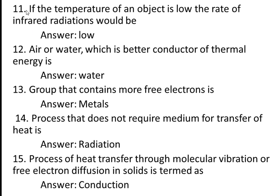Eleventh question: if the temperature of an object is low, the rate of infrared radiation will be low. This is Stefan–Boltzmann law — radiant energy is directly proportional to the fourth power of the absolute temperature of the object. So if the temperature is low, the radiant energy will be low.